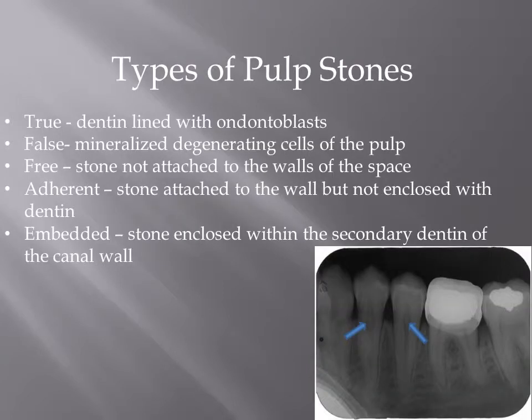Types of pulp stones: There are true pulp stones, which are dentin-lined with odontoblasts. False pulp stones, which are mineralized degenerating cells of the pulp.